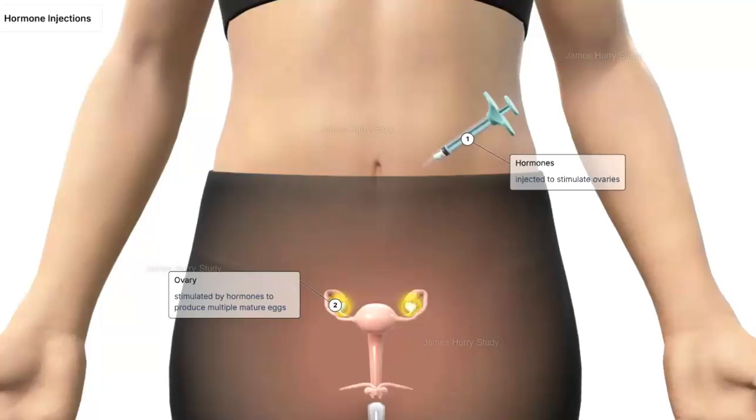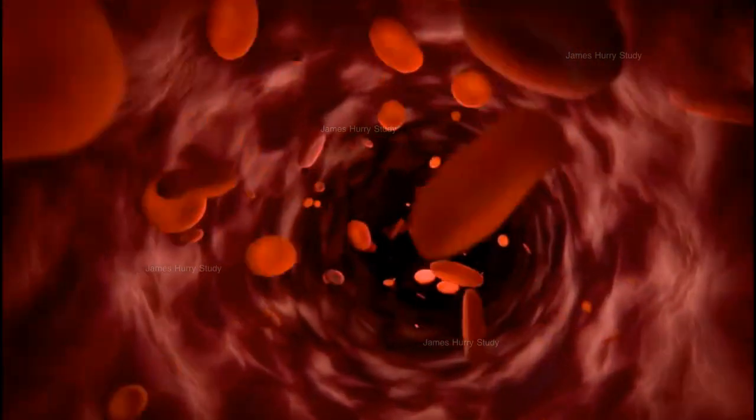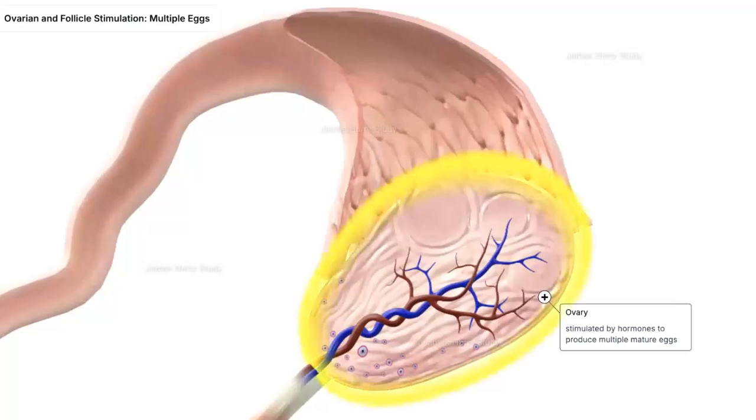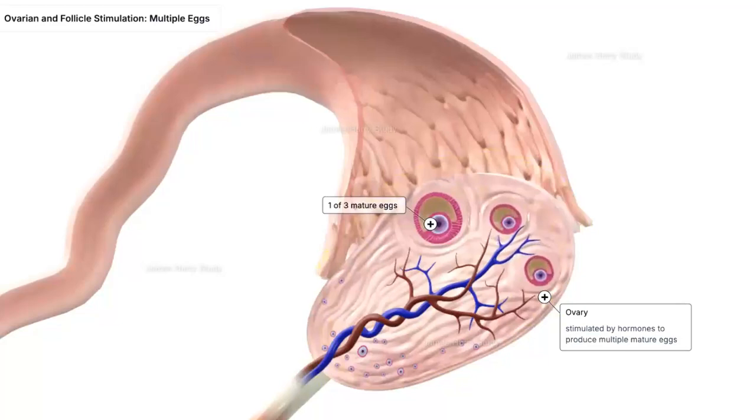After the injection, the hormones travel through the bloodstream to the ovaries, where they stimulate the ovarian follicles to develop and produce mature eggs. This allows the growth and maturation of the eggs to be observed.